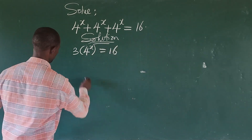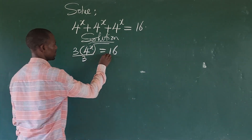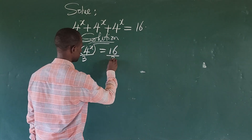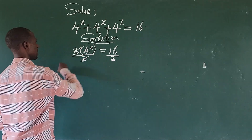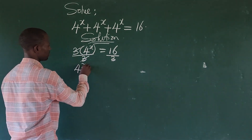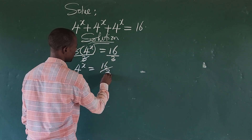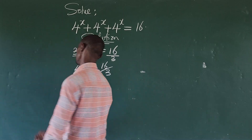Divide both sides by 3. So this will give us 4 to the power of x equals 16 over 3.